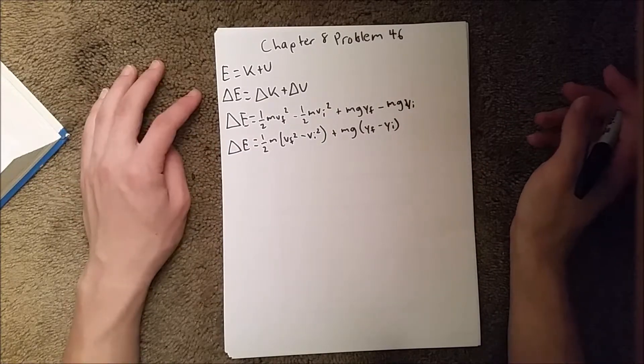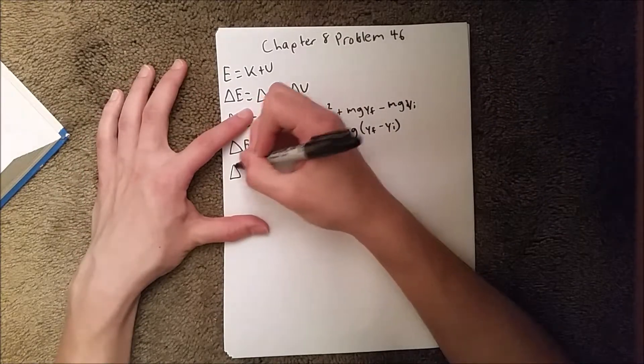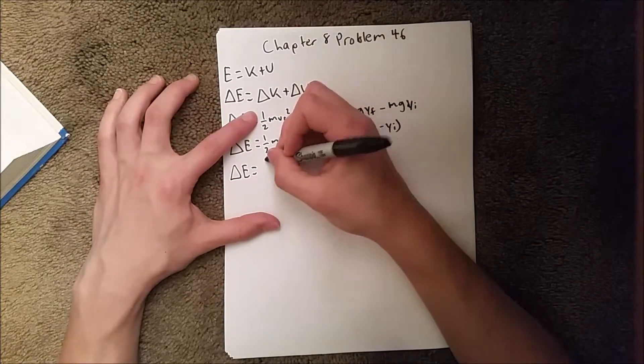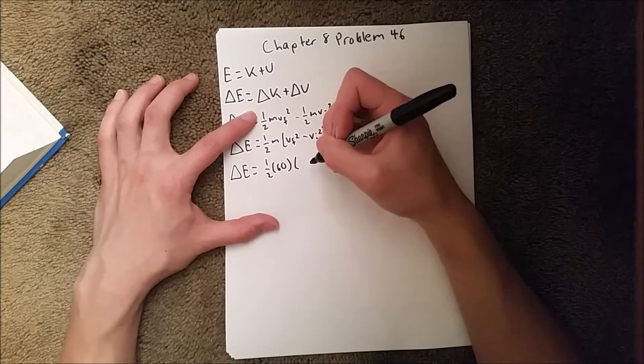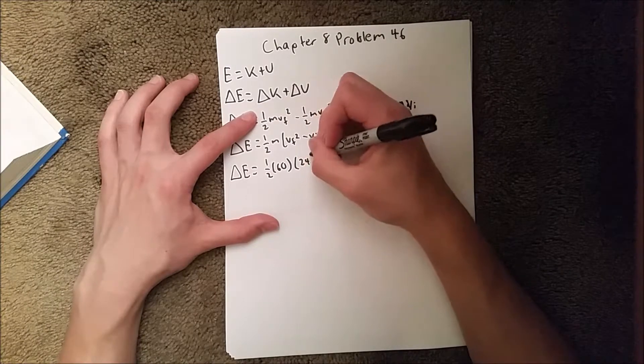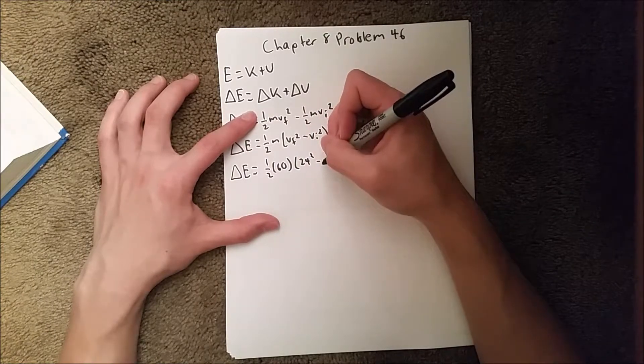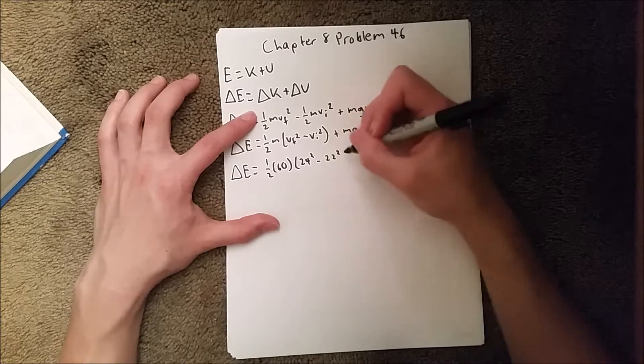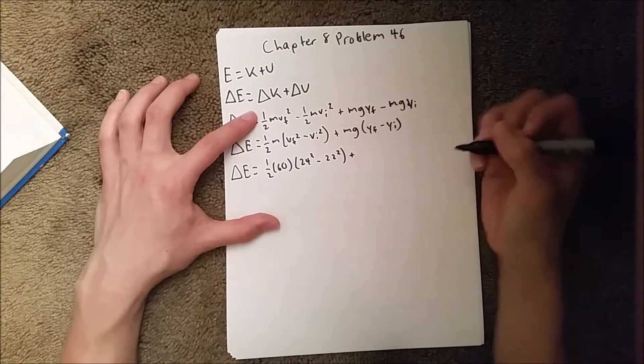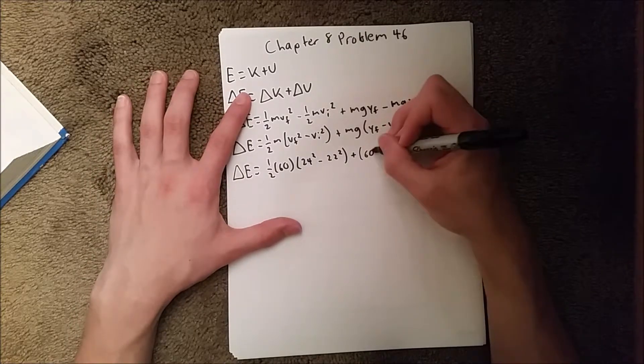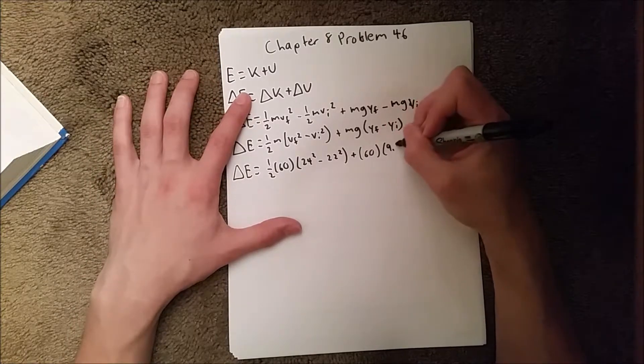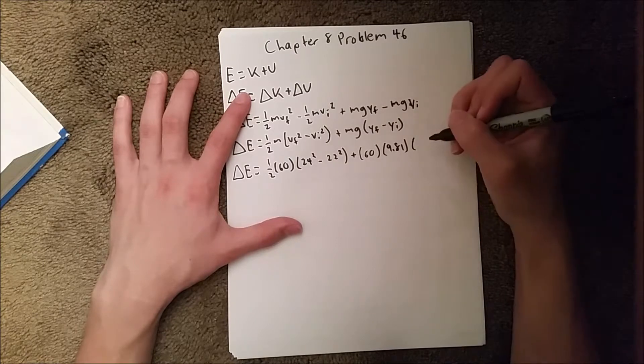When we plug in our values, we get one half times 60, and we get 24 squared minus 22 squared, plus 60 times 9.81 times...